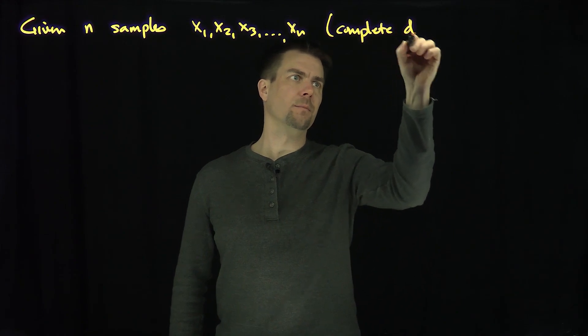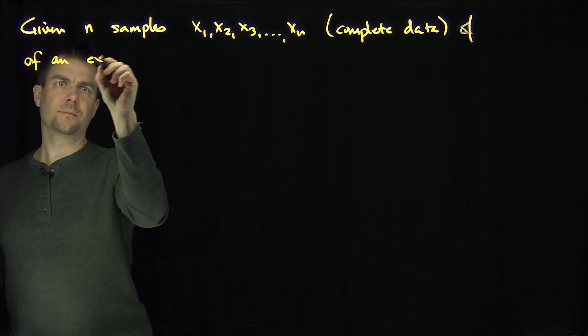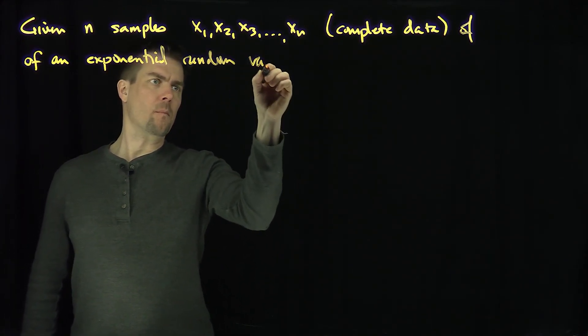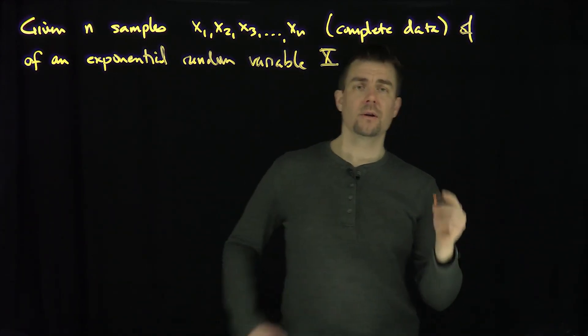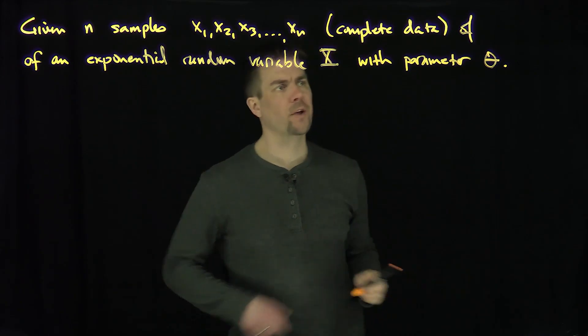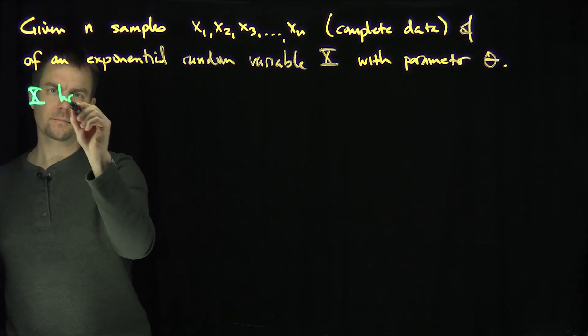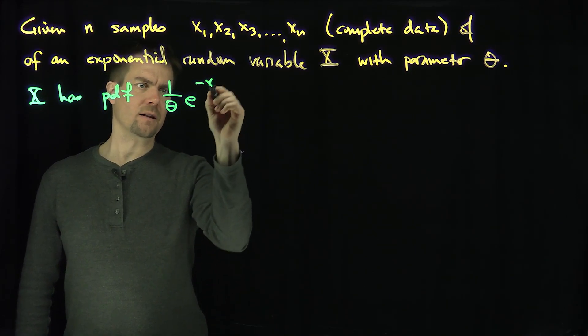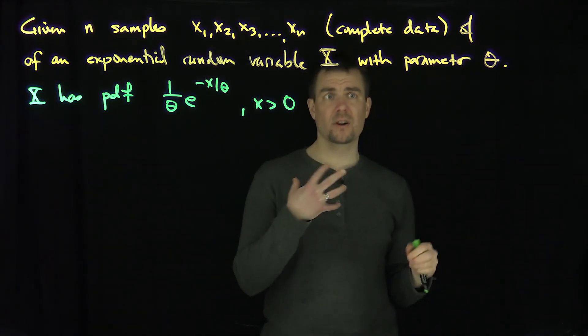...of a random variable, an exponential random variable x. And this x is going to be exponentially distributed with parameter theta. That means that x has PDF 1 over theta e to the negative x over theta for x greater than 0. That's the PDF of an exponential random variable with parameter theta.